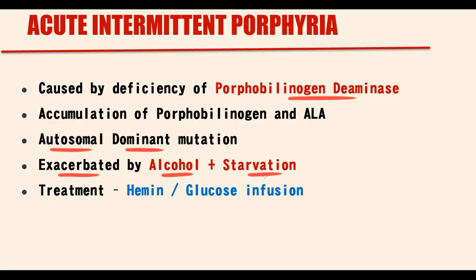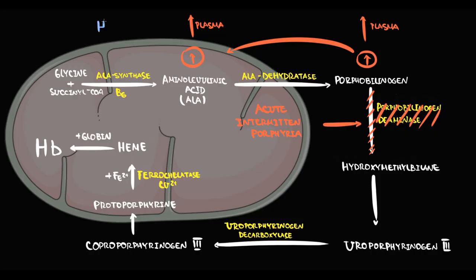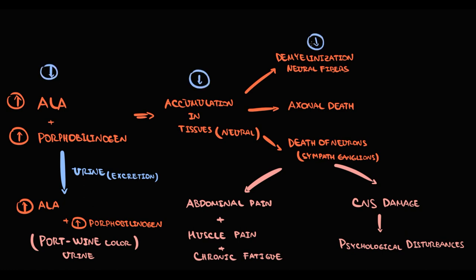The first drug that we can use for treatment is called hemin. Hemin inhibits ALA synthase. With inhibition of ALA synthase, the production of ALA decreases. With decreasing ALA, the production of porphobilinogen decreases. So the concentration of both ALA and porphobilinogen in the blood will decrease. As a result polyneuropathy will decrease, and thereby the severity of the clinical symptoms will decrease.